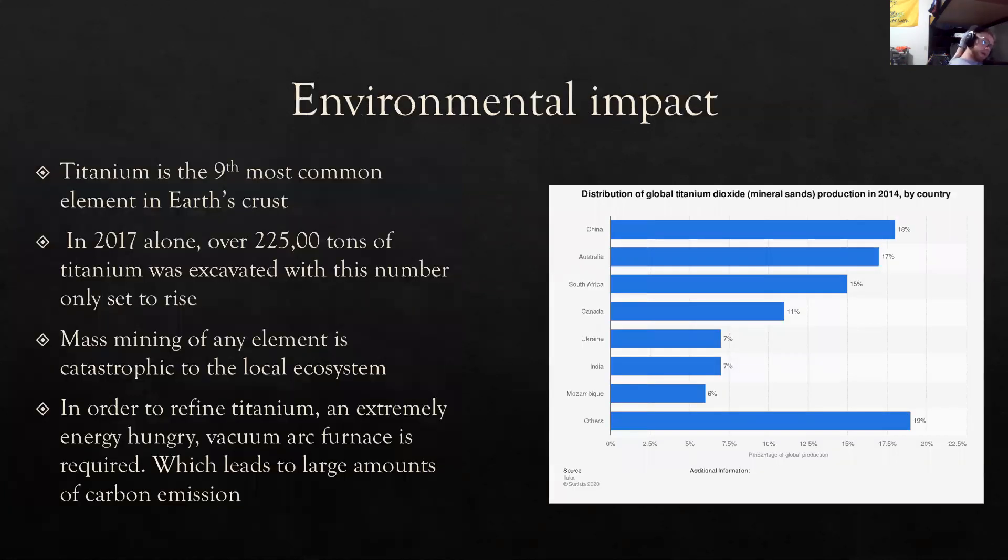So the environmental impact of titanium. Titanium is the ninth most common element in Earth's crust. And in 2017 alone, over 225,000 tons of titanium was extracted, with this number only set to rise as the process by which titanium is refined becomes cheaper and titanium becomes more desired.